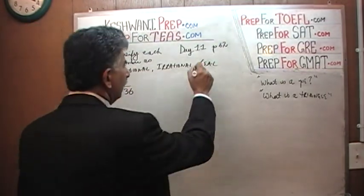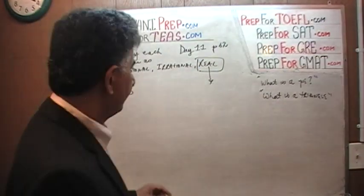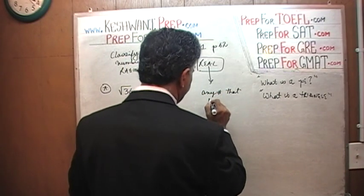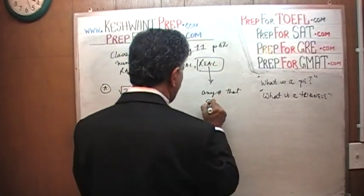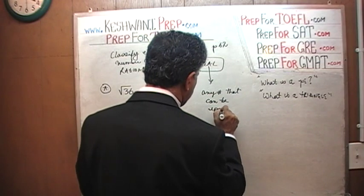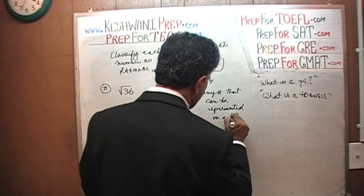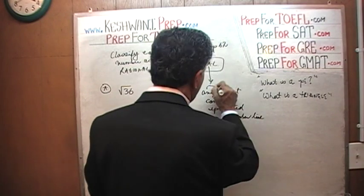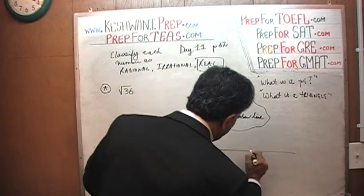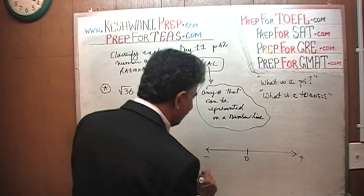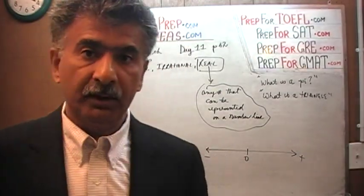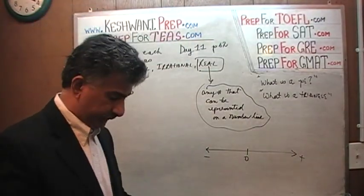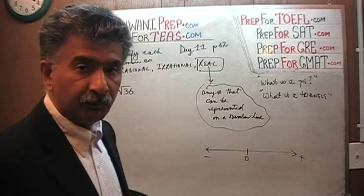Let's first talk about what is a real number. A real number is any number that can be represented on a number line. Here's our number line, here's our zero, here we have the positive numbers, here we have negative numbers. If you can represent the given number on a number line, it's a real number. Every number that you will see on this exam is going to be a real number.